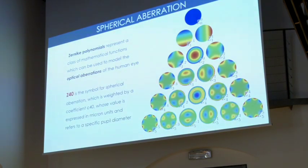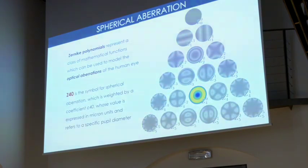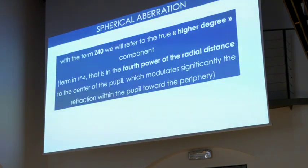Looking at the Zernike polynomials, Z40 is the symbol that describes spherical aberration. C40 is the coefficient that describes the value expressed in micron units, referred to a specific pupil diameter. The most important thing to note is that Z40 is related to the 4th power of the radial distance to the center of the pupil, and this is able to significantly modify the refraction of patients.